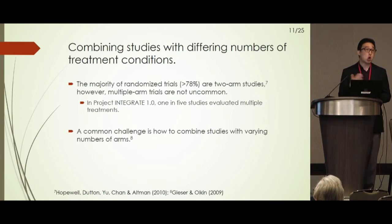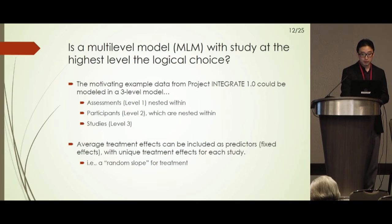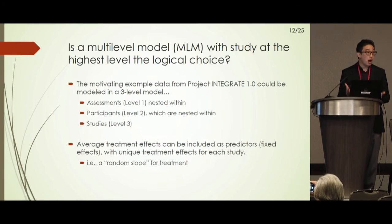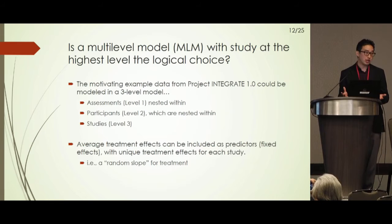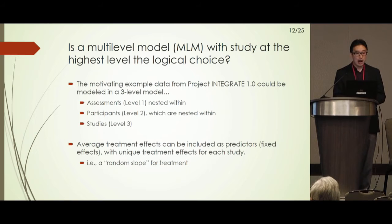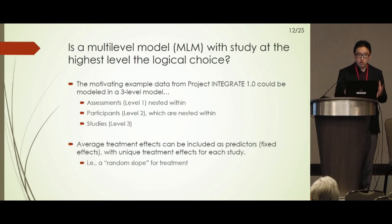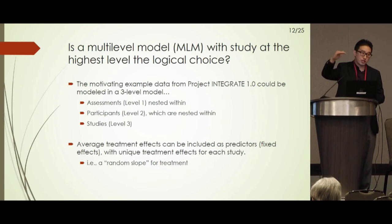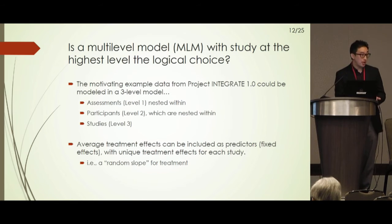Because of the way the data is structured, a multi-level model seems like a logical choice. You have observation level data — each participant may have multiple assessments — and those participants are recruited within a particular study. This lends itself to multi-level thinking: studies as the uppermost level of the model, participants nested within individual studies, and then potentially multiple assessments per participant. Treatment can then be modeled as a predictor of treatment effect within this multi-level framework.